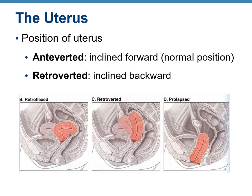The position of the uterus can vary. Anteverted means inclined forward — that is the normal position. Retroverted means tilted backward. The uterus can be at different degrees in either direction. A prolapsed uterus is when the uterus has been dislocated and moved inferiorly.